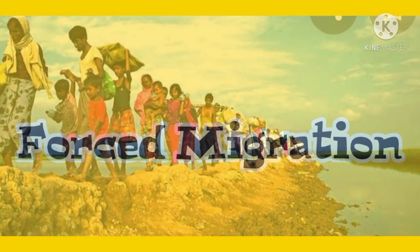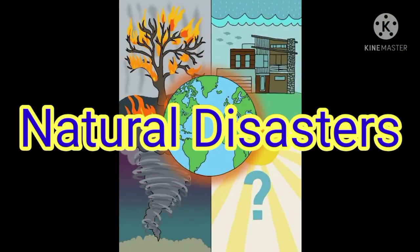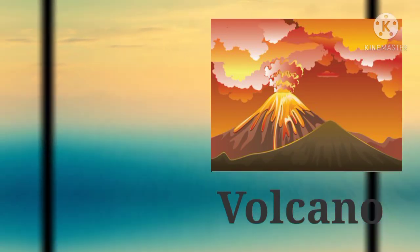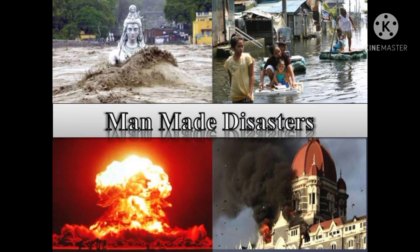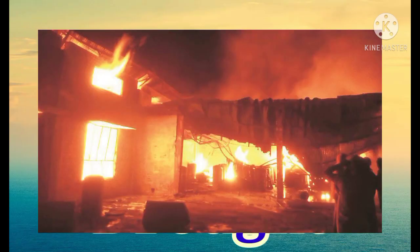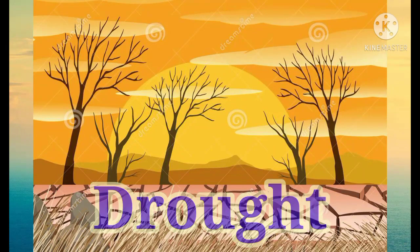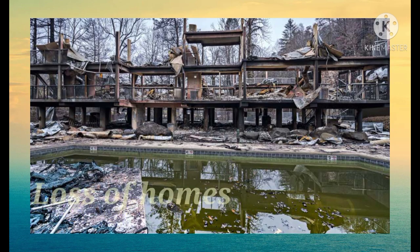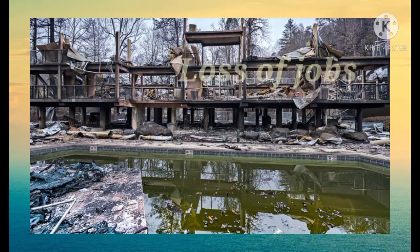Next we talk about forced migration. Forced migration is the movement of a person, family, or large groups of people due to a natural disaster like floods, earthquakes, tsunami, or volcano. Man-made disasters like fire, drought, or terrorist activities also force people to leave their homes and move to places that are safe for them. It results in the loss of homes and jobs for many people.